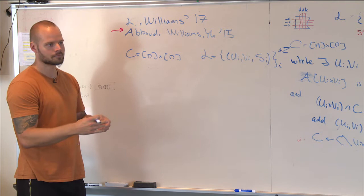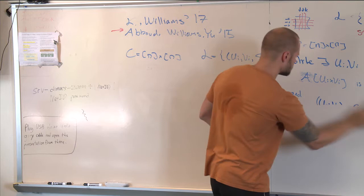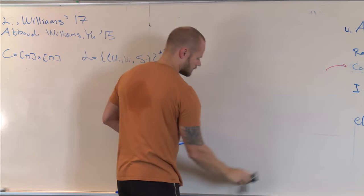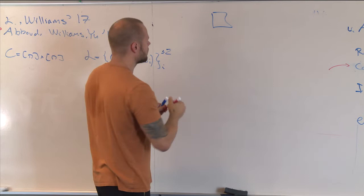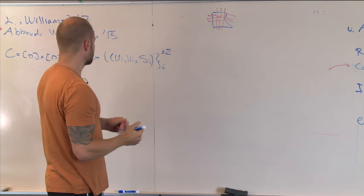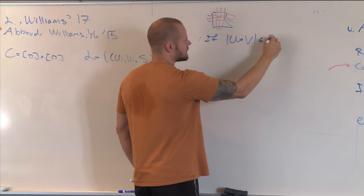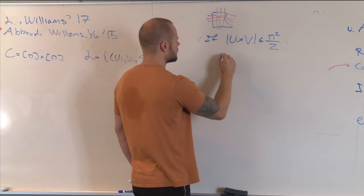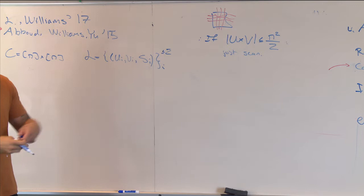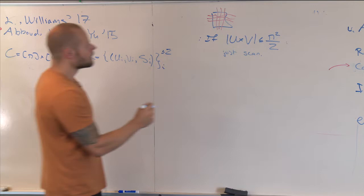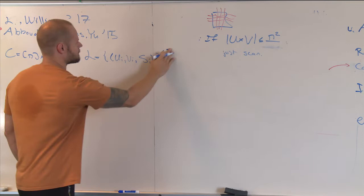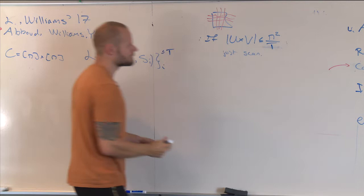We get a query U, V. We look at the submatrix A[U,V] and test whether it's empty. If the submatrix is small — size at most T — we just scan it directly. That's the easy case: the query is a small rectangle, we just look at it. Let me use T instead of S as the parameter name.